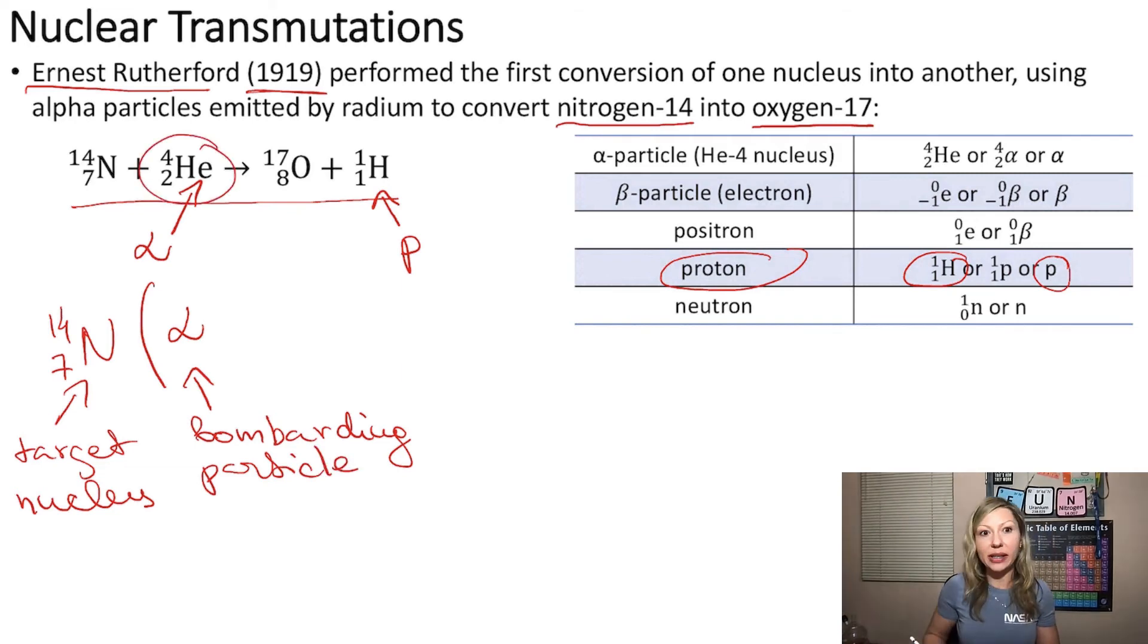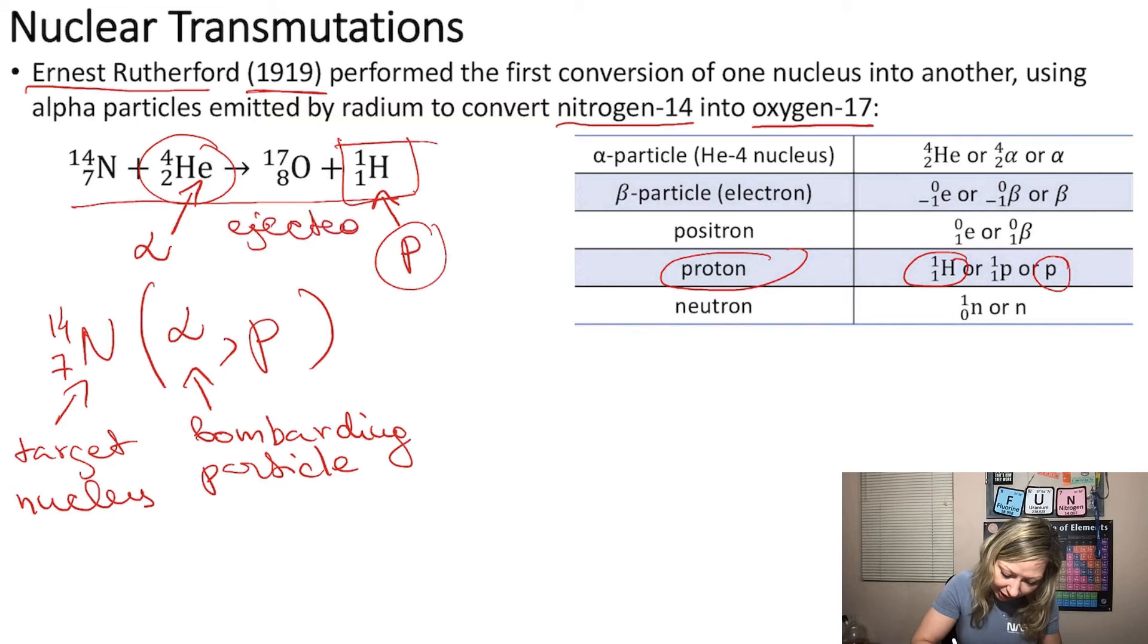So this is the same alpha particle right here. Then we will have to show the ejected particle, and that was the proton, right? So proton, this is the ejected particle. And we have a product nucleus, which was the oxygen-17, so O-17 and 8, the atomic number. So these are the two different ways how we can write out a nuclear transmutation reaction.